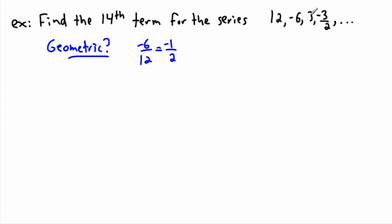We'd better check the other ones. 3 divided by negative 6, the third term divided by the second term. They both divide by 3, I get 1 over 2, but a negative on the bottom is the same as a negative on the top. So that's the same.